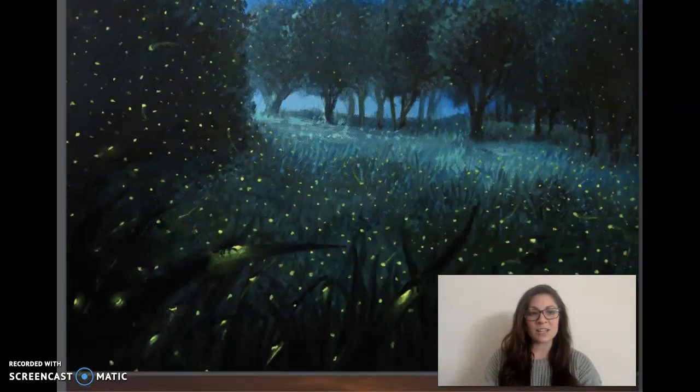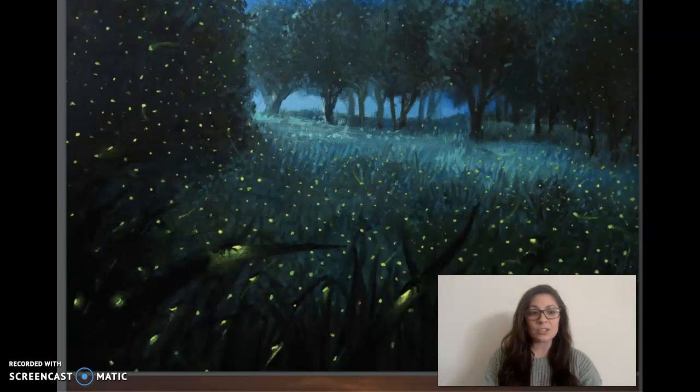When humans first discovered us lighting up the forest, they were amazed by how much light we produced. In ancient China and Japan, people collected us in transparent jars and used us as lanterns to find their way in the dark. They named us fireflies, but we are not like flies at all, and our light, unlike fire, is actually cold.